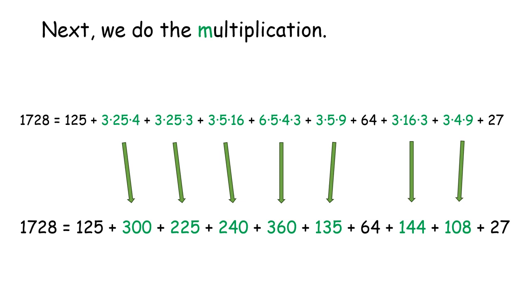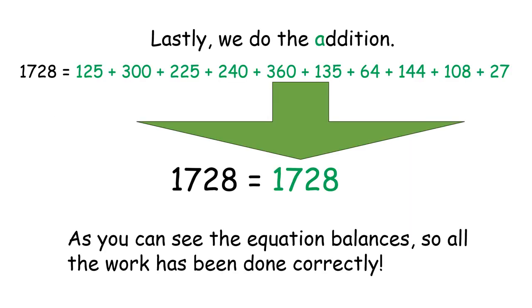Next, we do the multiplication. 3 times 25 times 4 is 300. 3 times 25 times 3 is 225. 3 times 5 times 16 is 240. 6 times 5 times 4 times 3 is 360. 3 times 5 times 9 is 135. 3 times 16 times 3 is 144. 3 times 4 times 9 is 108.